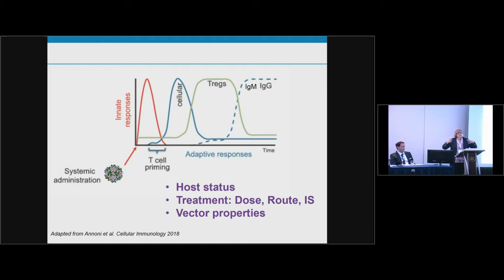All of this is also determined by the host status: the genetic makeup of the person — in particular whether they are genetically null for the transgene — makes a huge difference in their ability to raise an immune response. Their inflammatory status, dose, route, and immunosuppressive aspects also affect the immune response. And of course the properties of the vector matter — you can engineer different AAVs to be very differently immunogenic.